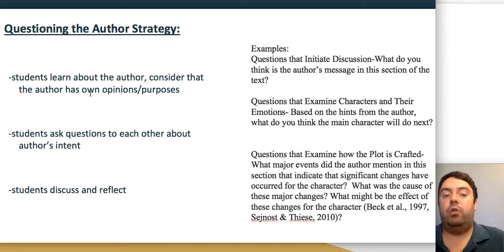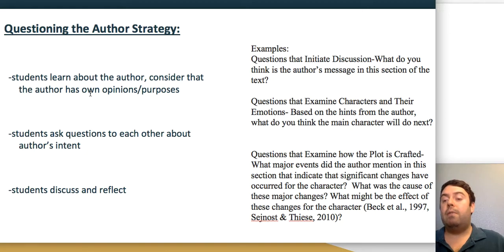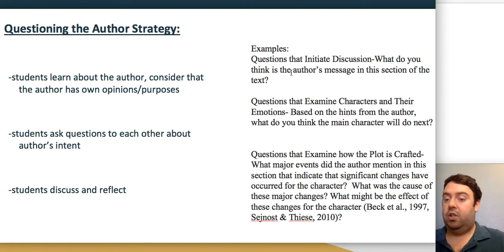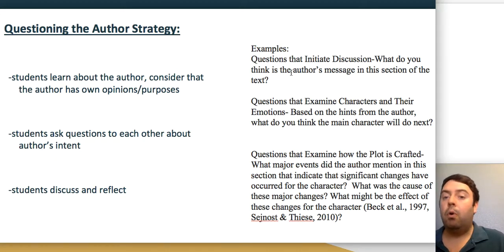Another strategy is questioning the author, beneficial for both fiction and nonfiction texts across all content areas. Students research the author or the topic, then write their own questions about what they would ask the author, what they'd suggest to the author, or what they can determine was the author's intent. Students share and discuss their questions. Question types include discussion initiators—like 'What was the author's message in this section?'—and questions examining specific characters or elements, such as why a particular character or piece of information was important.